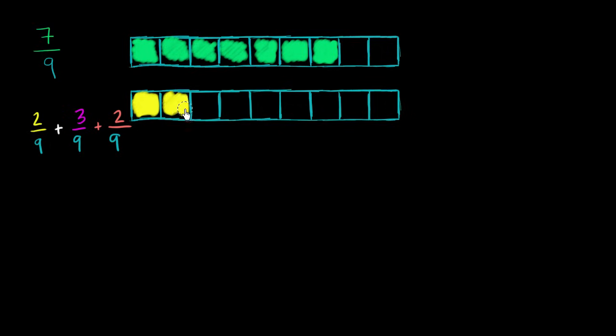And then we're going to add 3 more ninths. So 1, 2, 3. We add 3/9 right over there. And then 2 more ninths: 1 and 2.